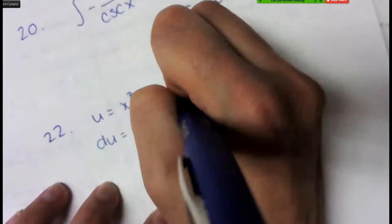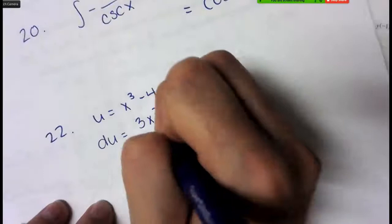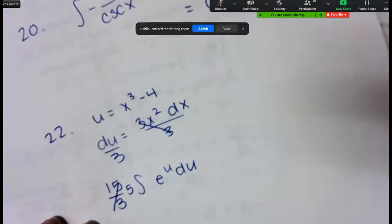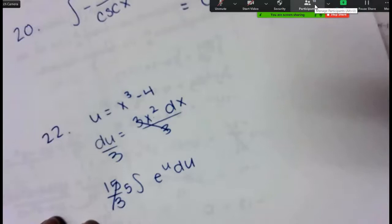So if you turn to 22, now that I made all your phones join, U would equal X cubed minus 4. They tell you that. So you have to find your DU, which would be 3X squared DX. So then in that case, you have to almost pull out the 3 and the 15, so that you have the X squared DX matching for DU, and you get E to the U DU, and you can simplify 15 divided by 3. So you have 5, the integral of E to the U DU, which is 5E to the U plus C, and then you just replace your U with X cubed minus 4 to get your final answer.